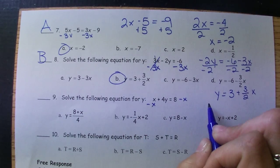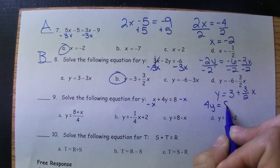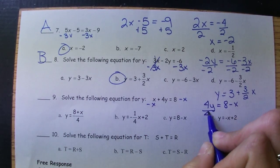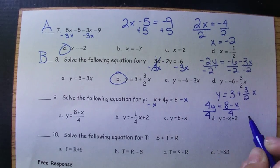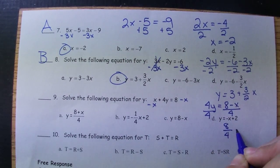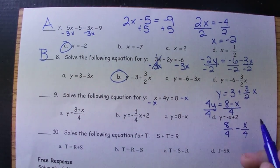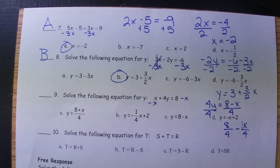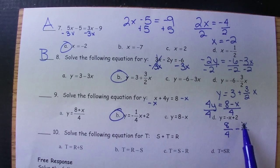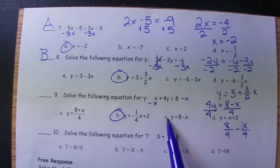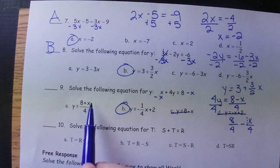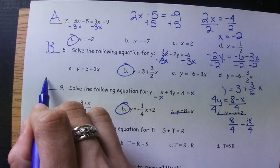Number nine, if we subtract the X, we'll say 4Y equals 8 minus X. So there'll be an 8 divided by 4 and an X divided by 4. So 8 divided by 4 gives us a 2. And then there's really a 1 here. So a negative 1 fourth X. We know it can't be here or here because it doesn't have the X divided by anything. And this one has the sign wrong.